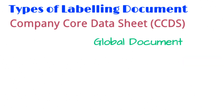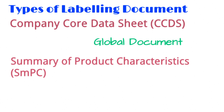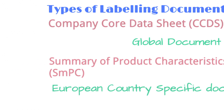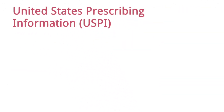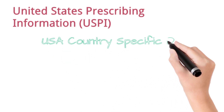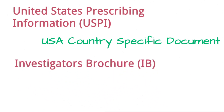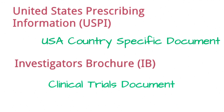The second labelling document is the Summary of Product Characteristics, in short SmPC — this is a European country-specific document. The third labelling document is the United States Prescribing Information, in short USPI — this is a United States country-specific document. The fourth labelling document is the Investigator's Brochure, in short IB — this document is used for reports received from clinical trial sources. There are some other country-specific labelling documents as well, based on each country's specific guidelines.